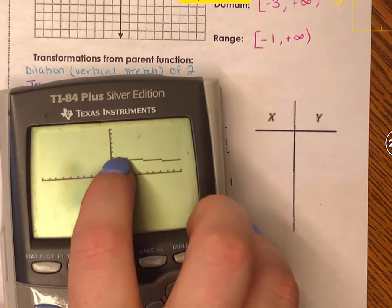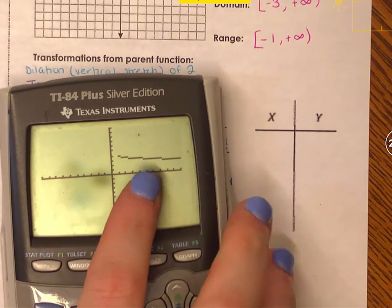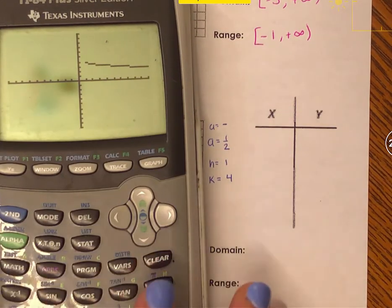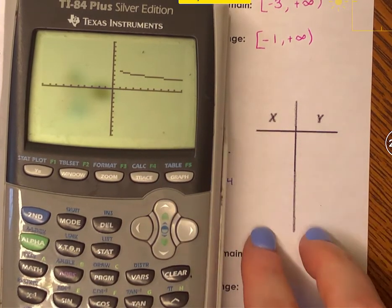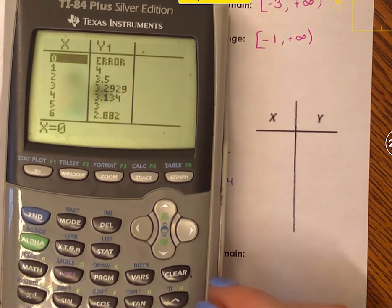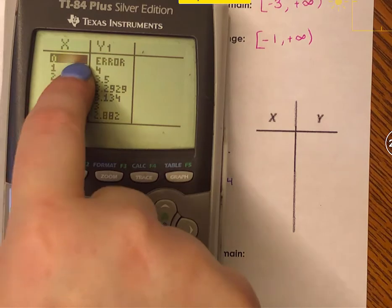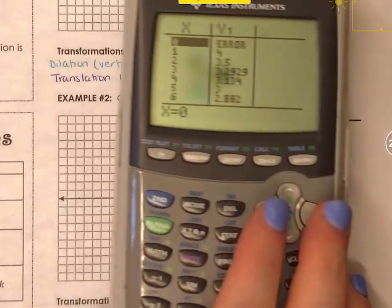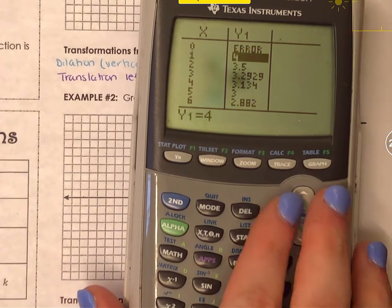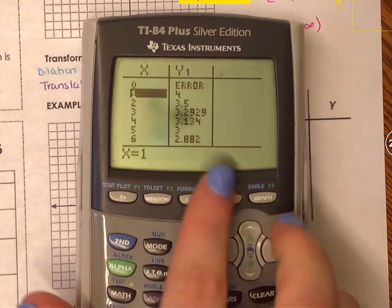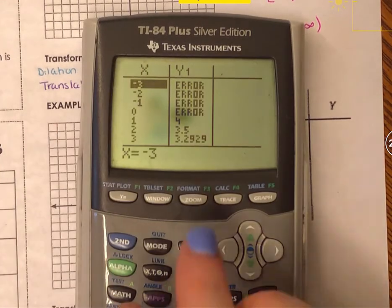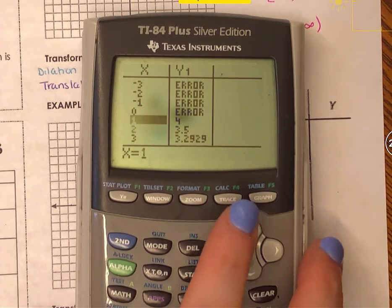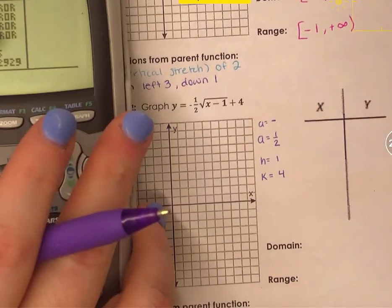The graph has a starting point — it does not keep going left or up. That starting point should come from h and k, which are 1 and 4. I verify by going to the table of values. At x equals 1, y equals 4 — a correct coordinate. For x values less than 1, the y values are errors, confirming that (1, 4) is the starting coordinate.